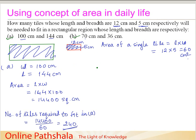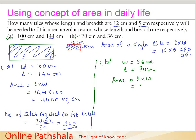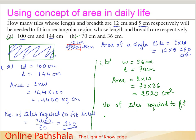In example B, the width W is 36 cm and the length L is 70 cm. Therefore the area equals 70 multiplied by 36, which gives 2,520 square cm. The number of tiles required to fit area B equals 2,520 divided by 60, which gives us 42. So we need 42 tiles to cover this area.